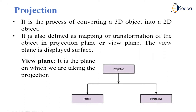We have to convert a 3D object into a 2D object — an image which can be displayed on a screen. It is also defined as mapping or a transformation of an object onto a projection plane or a view plane. The view plane is a displayed surface on which we are taking the projection of the 3D object.